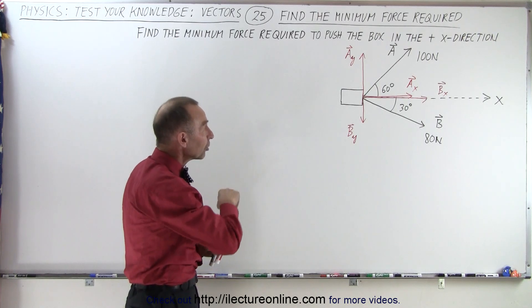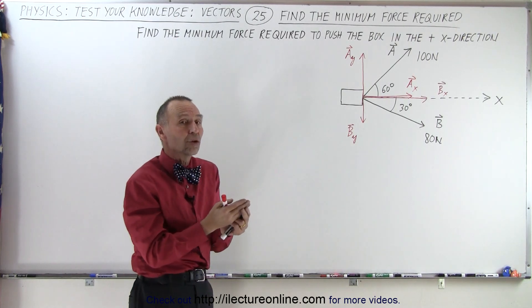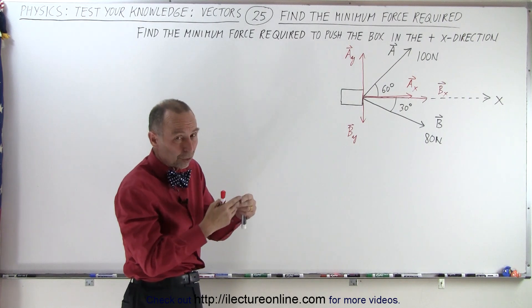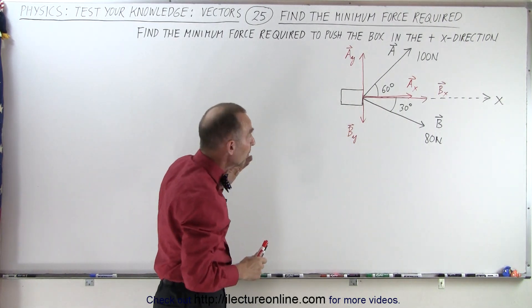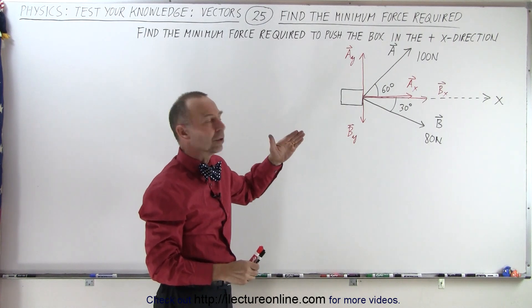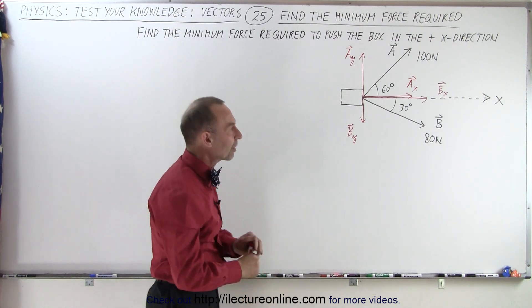However, the two other components, the sum of those two components, if they're not equal to zero, if the sum of those two components, a sub y and b sub y is not equal to zero, the box will get pulled at an angle, it will not be in the positive x direction.